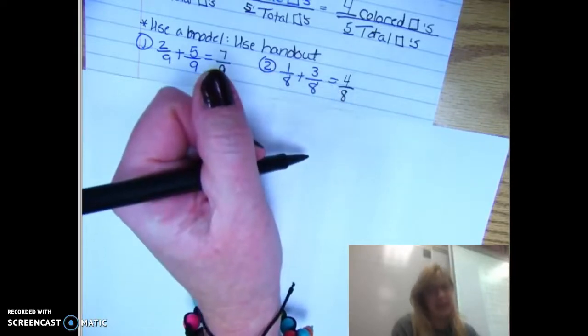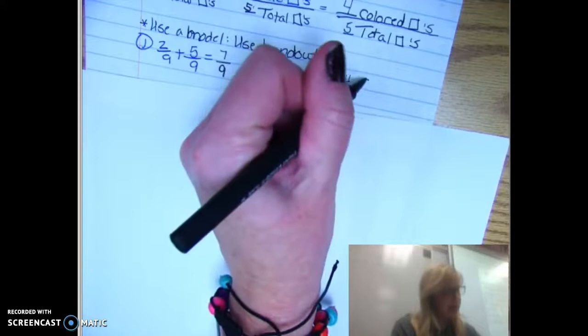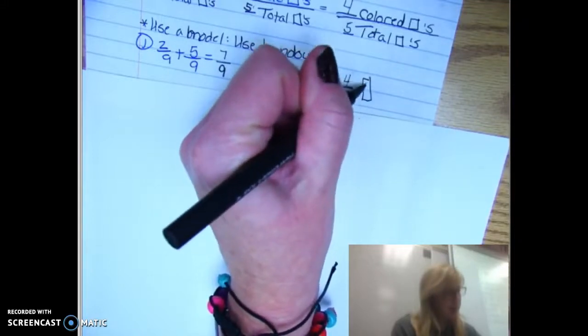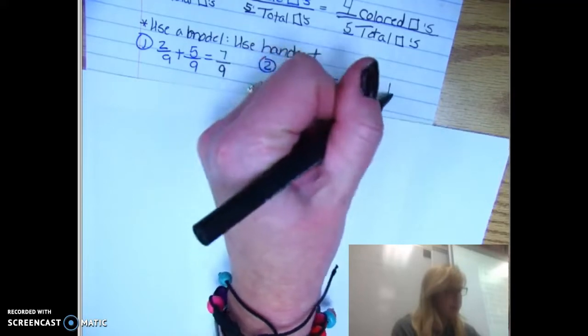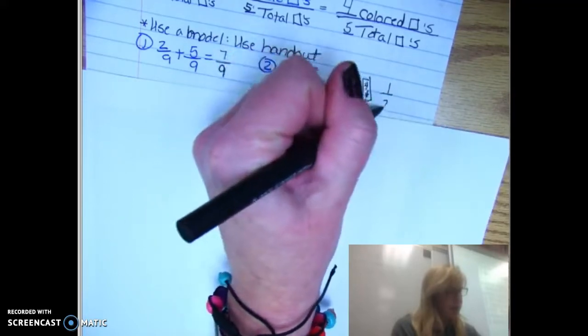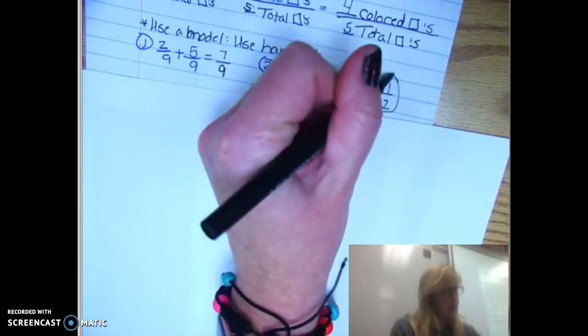Now, if I look at this, I can see right now I can divide this by four over four. There's my fancy form of one right there. Four divided by four is one. Eight divided by four is two. So my final answer is one half.